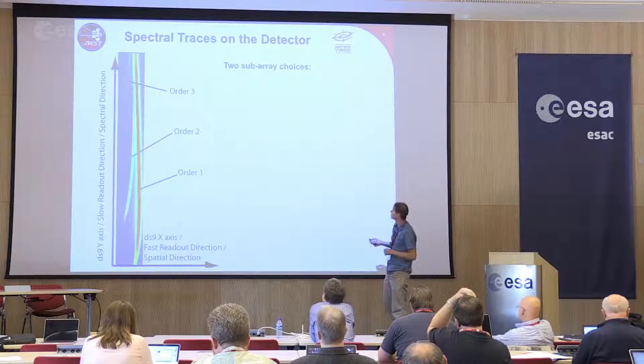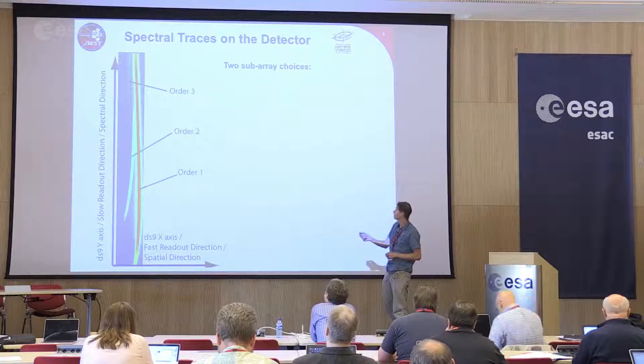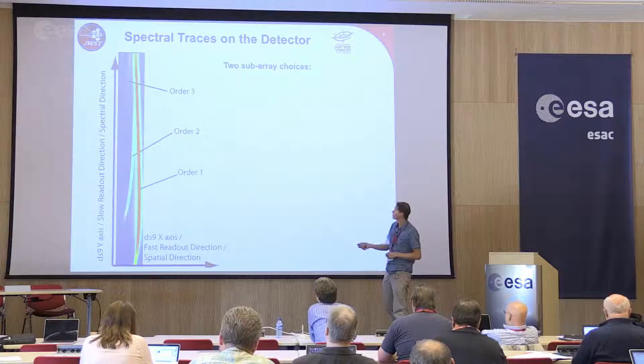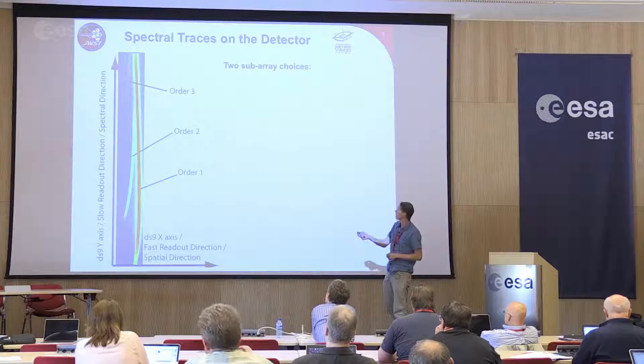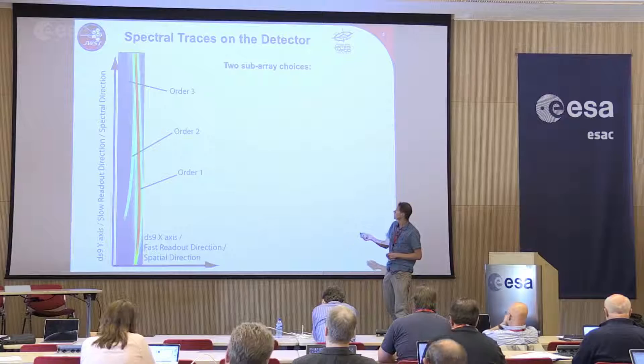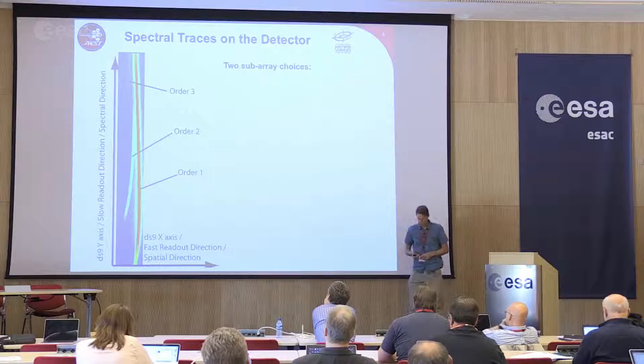This is what the data look like on the array. It's cross-dispersed, so we get multiple orders appearing spatially separated from each other. The bright trace in red is the first order, going all the way from the top to the bottom of the detector. The fainter trace is the second order, which is curved and well separated from the first order in the lower region, but actually merges into the first order in the upper region — I'll talk more about that in a minute. You can also see faintly a third order, which is not used for science because it's much weaker.